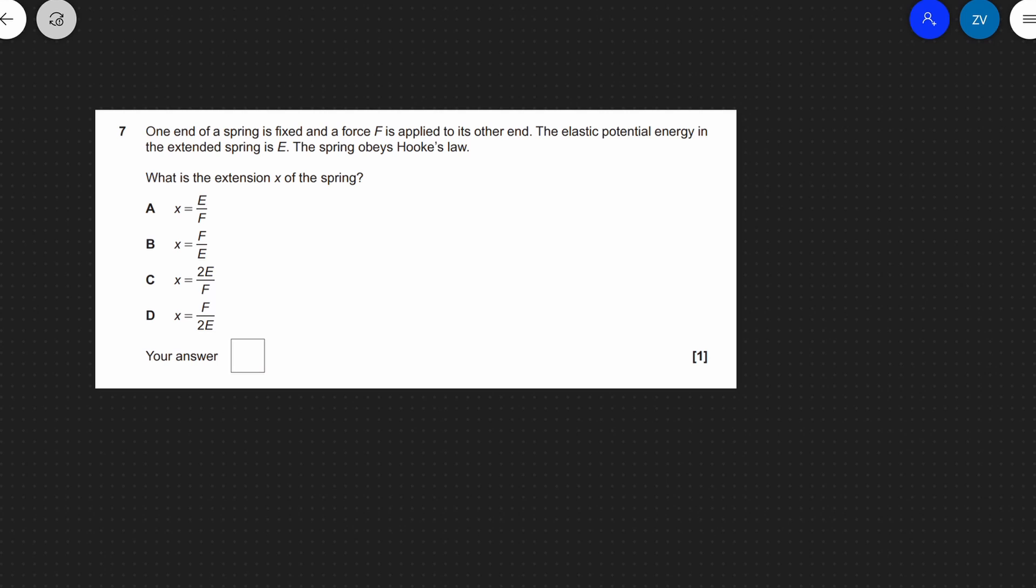This is question seven from OCR's modelling physics paper from June 2018. One end of the spring is fixed, and you apply a force to the other end. The elastic potential energy of the extended spring is E, and the spring obeys Hooke's law. What is the extension of the spring? This would be a perfect opportunity to pause this video and attempt the question independently.